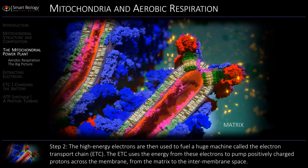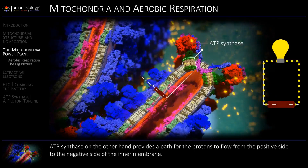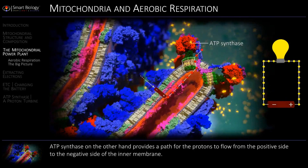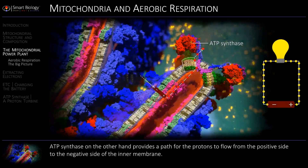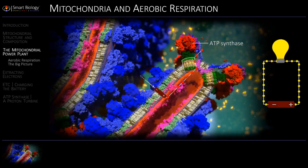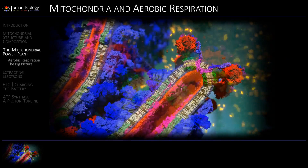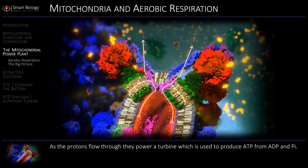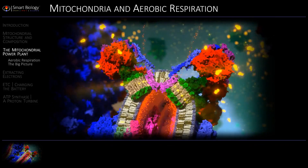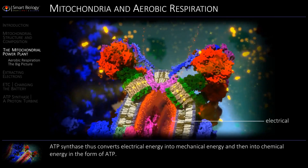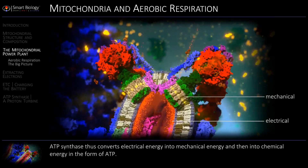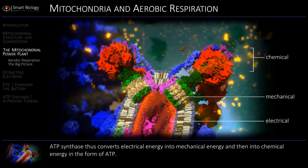Protons are pumped from the matrix to the intermembrane space. ATP synthase, on the other hand, provides a path for the protons to flow from the positive side to the negative side of the inner membrane. As the protons flow through, they power a turbine, which is used to produce ATP from ADP. ATP synthase thus converts electrical energy into mechanical energy, and then into chemical energy in the form of ATP.